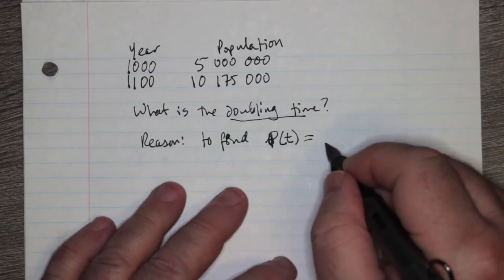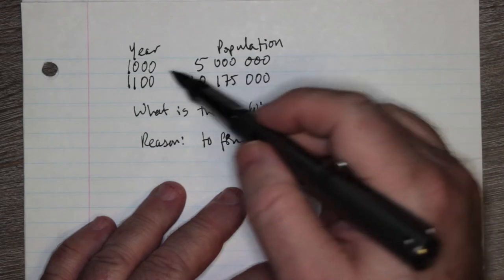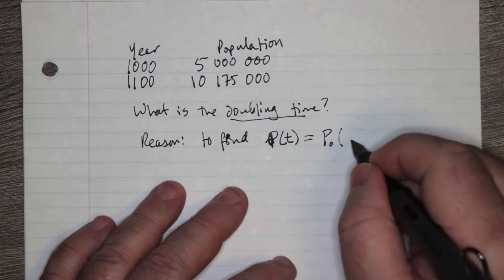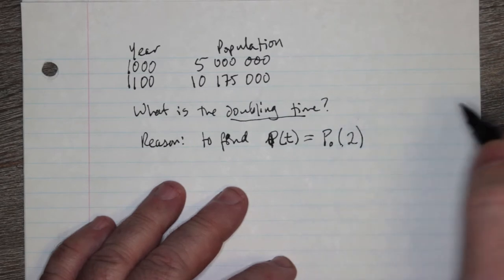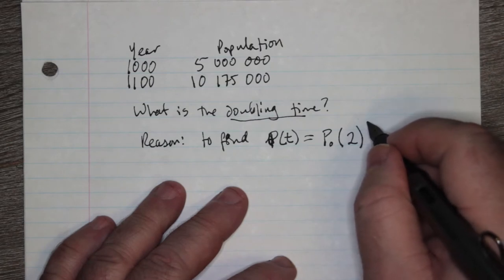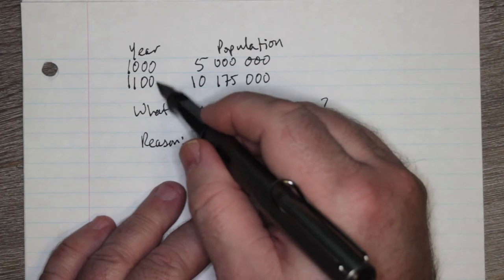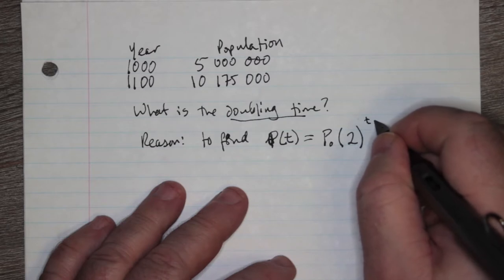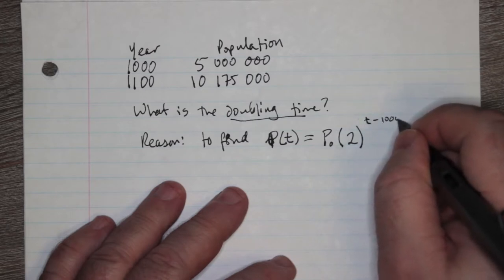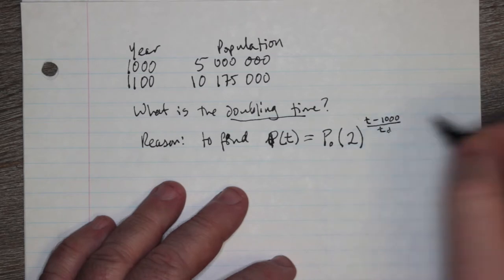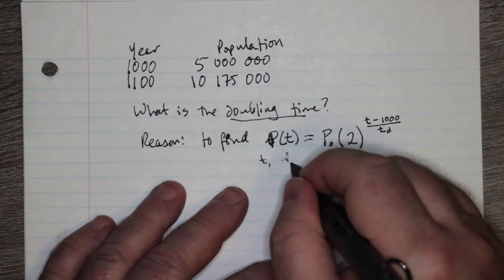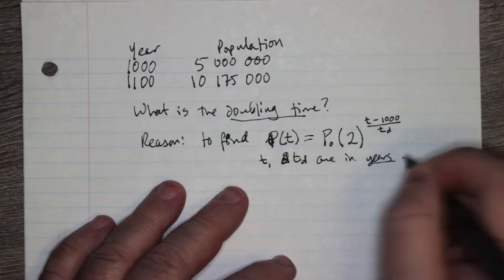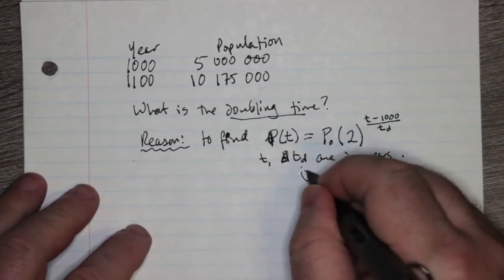So we need the population at time zero, which is really at the beginning of our measurements, multiplied by 2 to the power of, well if we're using the years here, then I guess we're going to have to measure the current year minus 1000 divided by the doubling time, so t and td are in years.